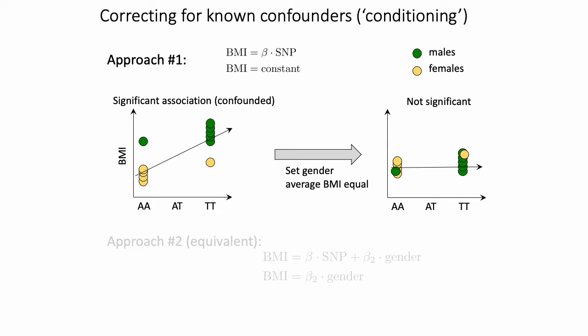A confounding variable basically says: I can explain why this SNP is associated with this trait, so there's some other explanation for why the correlation exists. As a hypothetical example — suppose males on average had significantly higher BMI than females for reasons other than genetics, such as because males on average ate much more poorly than females.